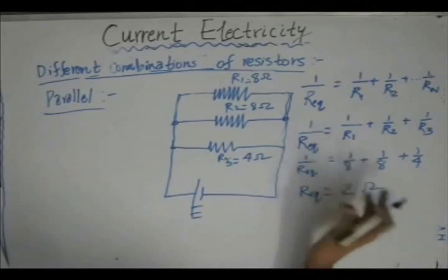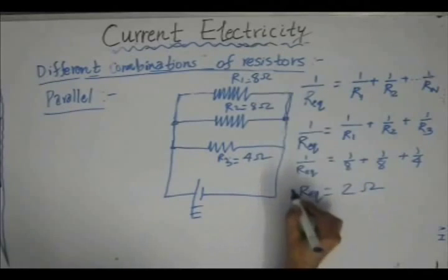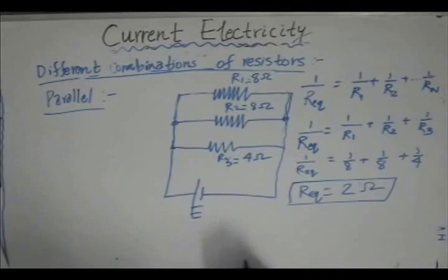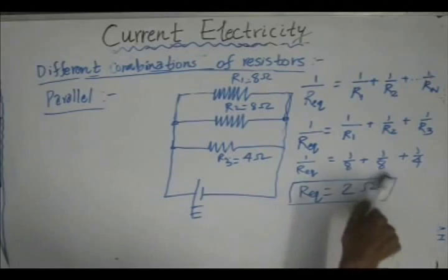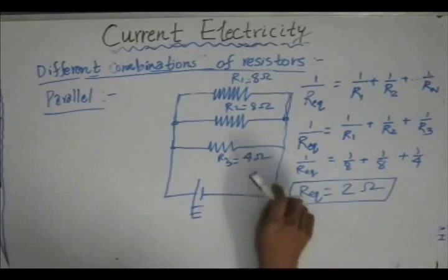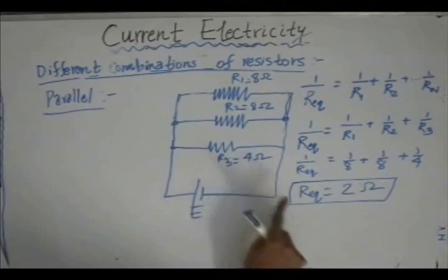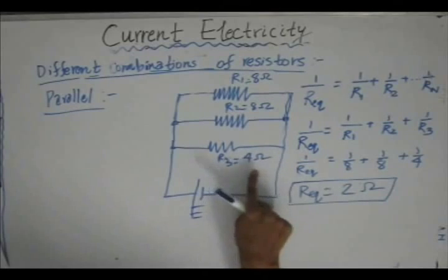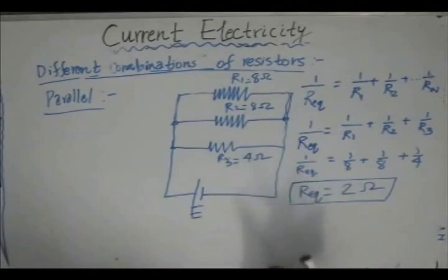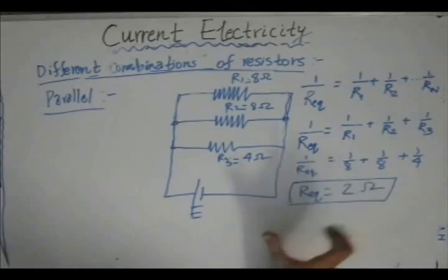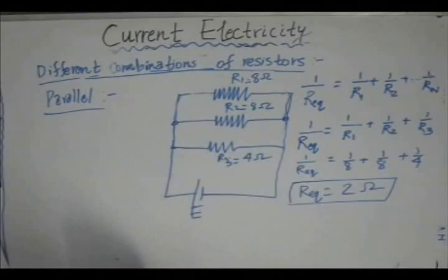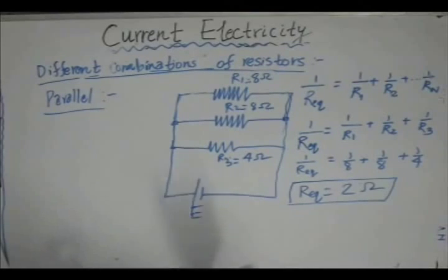Keep in mind that at the end you must take the reciprocal of the result, since the left-hand side is 1/R_equivalent. So the equivalent resistance is 2 ohm. Notably, this 2 ohm equivalent is even smaller than the smallest individual resistor, which is 4 ohm. Therefore, if you want to decrease circuit resistance, connect a small-value resistor in parallel — the net resistance will be even smaller than that smallest resistor. We will use this concept later when discussing voltmeters and ammeters.